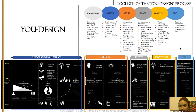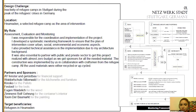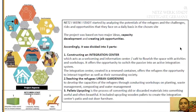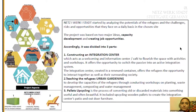This is one of my most beloved projects. It was in Stuttgart, Germany. The design challenge was the inactivity of refugee camps in Stuttgart during the peak of the refugee crisis in Germany, done in 2015. The location was Hermanndin, a selected refugee camp. The project was very inspiring because it started from the very beginning of selecting an intervention location — there was massive research on which refugee camp could have a ripple effect of change on others, all the way through to the implementation.